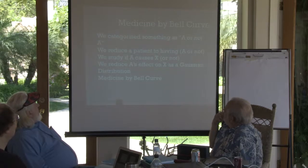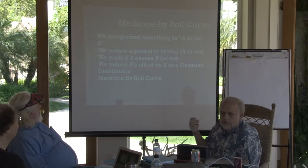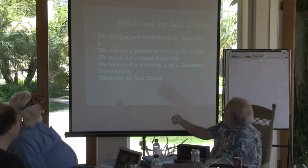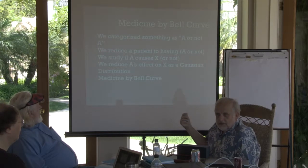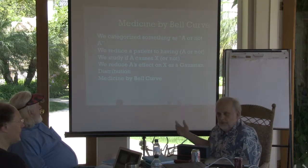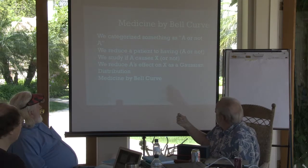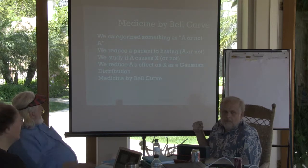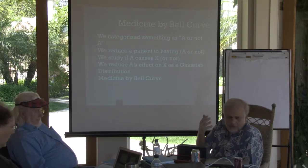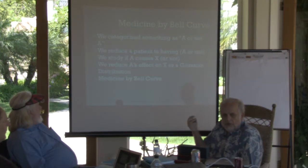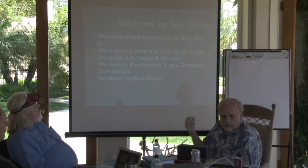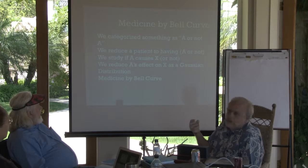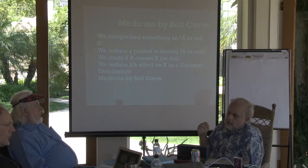I call that medicine by bell curve — we start out by saying something is A or not A, reduce that to a patient having A or not, then study if A causes disease X through random clinical trials, controlling for everything else. Then we reduce A's effect on X as a Gaussian distribution, assuming a normal distribution. My point is I think we've had a fundamental problem in that we're over-specifying, over-dichotomizing, and then trying to reason from relationships that need to be treated in a broader contextual manner.